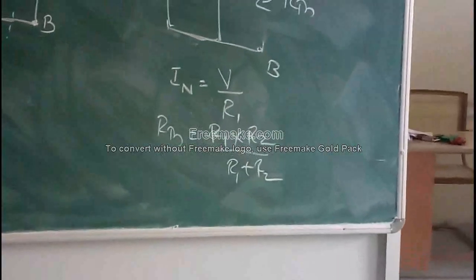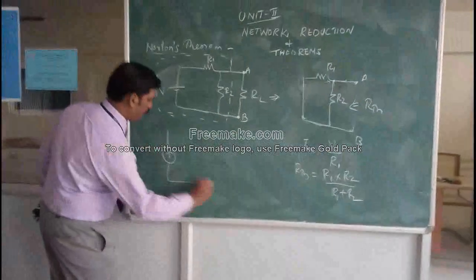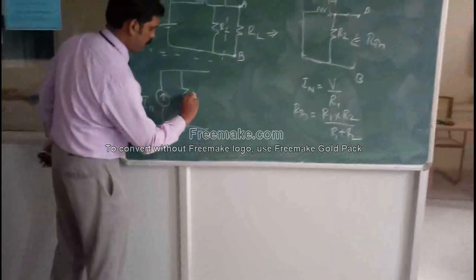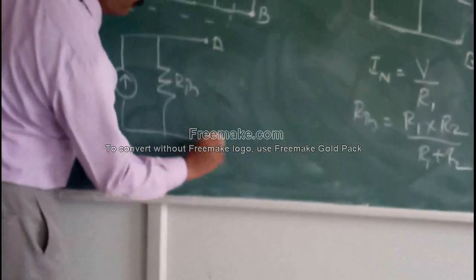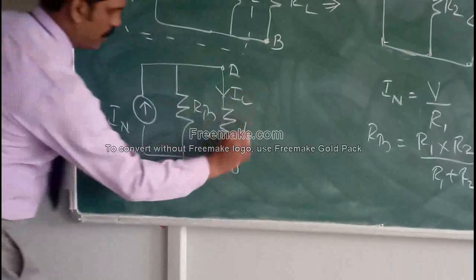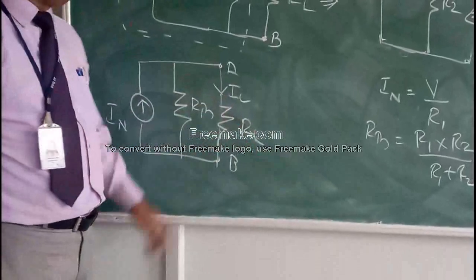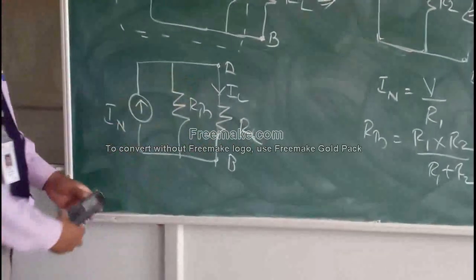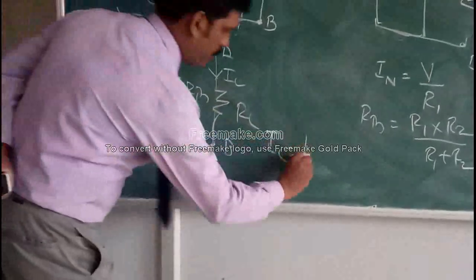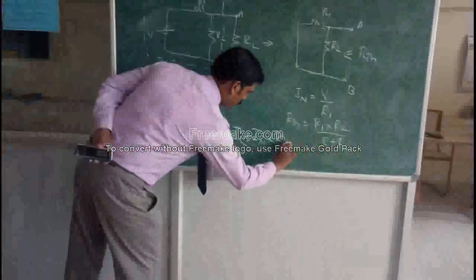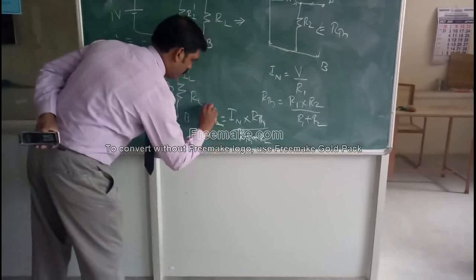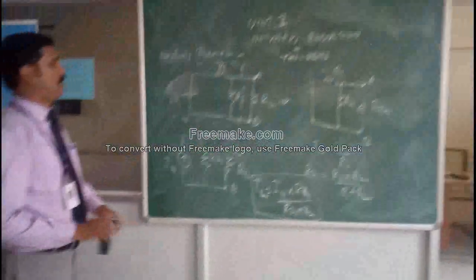Now we can model the Norton equivalent circuit with the Norton current IN and RTH in parallel, and connect the load resistance RL across terminals A and B. The current flowing through RL can easily be found by applying the current divider method: IL equals IN multiplied by RTH divided by (RTH + RL). This is how you can find the load current using Norton's theorem. Thank you.